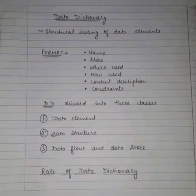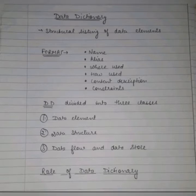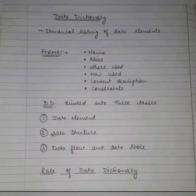What is the format of a data dictionary? The format includes: first, name; then alias; then where used; how used; content description; and then constraints. This is the format — we need to remember these items in order.